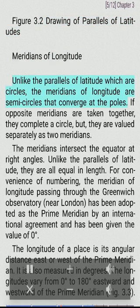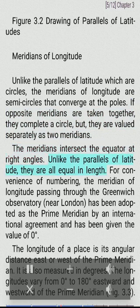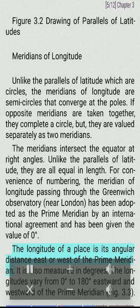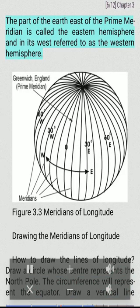Meridians of longitude: Unlike the parallels of latitude which are circles, the meridians of longitude are semicircles that converge at the poles. If opposite meridians are taken together, they complete a circle, but they are valued separately as two meridians. The meridians intersect the equator at right angles. Unlike the parallels of latitude, they are all equal in length. For convenience of numbering, the meridian of longitude passing through the Greenwich Observatory, near London, has been adopted as the prime meridian by an international agreement and has been given the value of zero degrees. The longitude of a place is its angular distance east or west of the prime meridian. It is also measured in degrees. The longitudes vary from zero degrees to 180 degrees eastward and westward of the prime meridian. The part of the Earth east of the prime meridian is called the eastern hemisphere and in its west referred to as the western hemisphere.